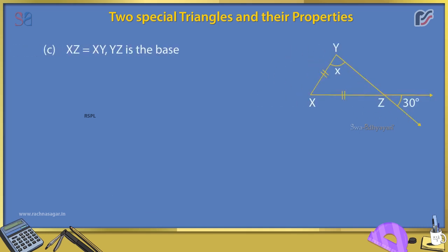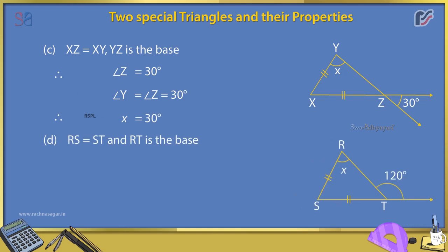Solution C: XZ = XY and YZ is the base, so angle Z = angle Y = 30°, therefore x = 30°. Solution D: RS = ST and RT is the base. Angle T + 120° = 180° (linear pair), so angle T = 60°, therefore x = 60°.